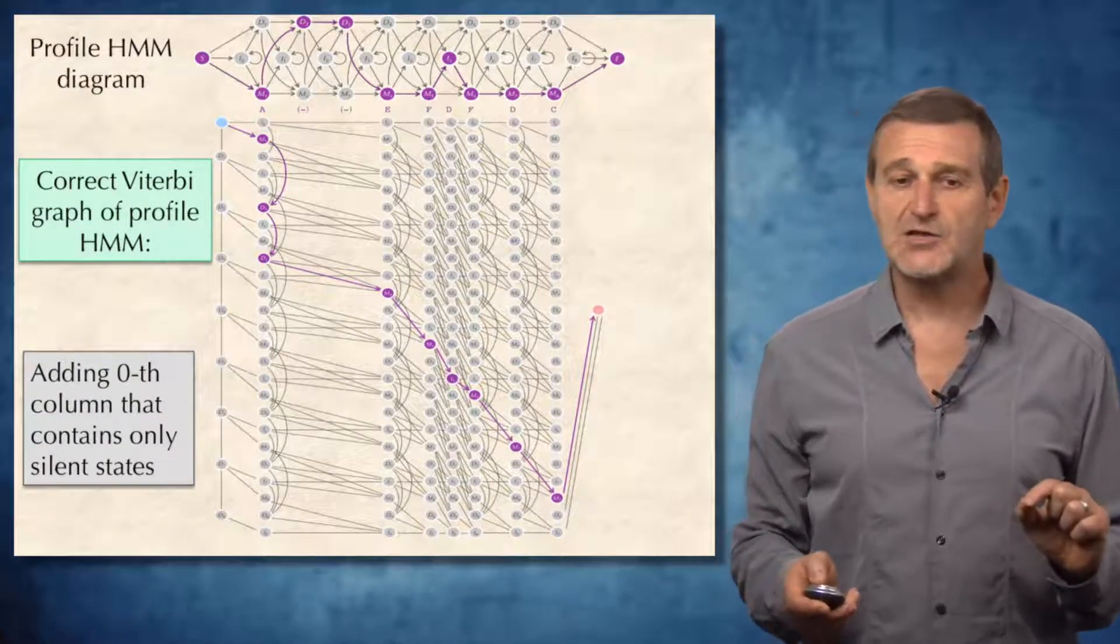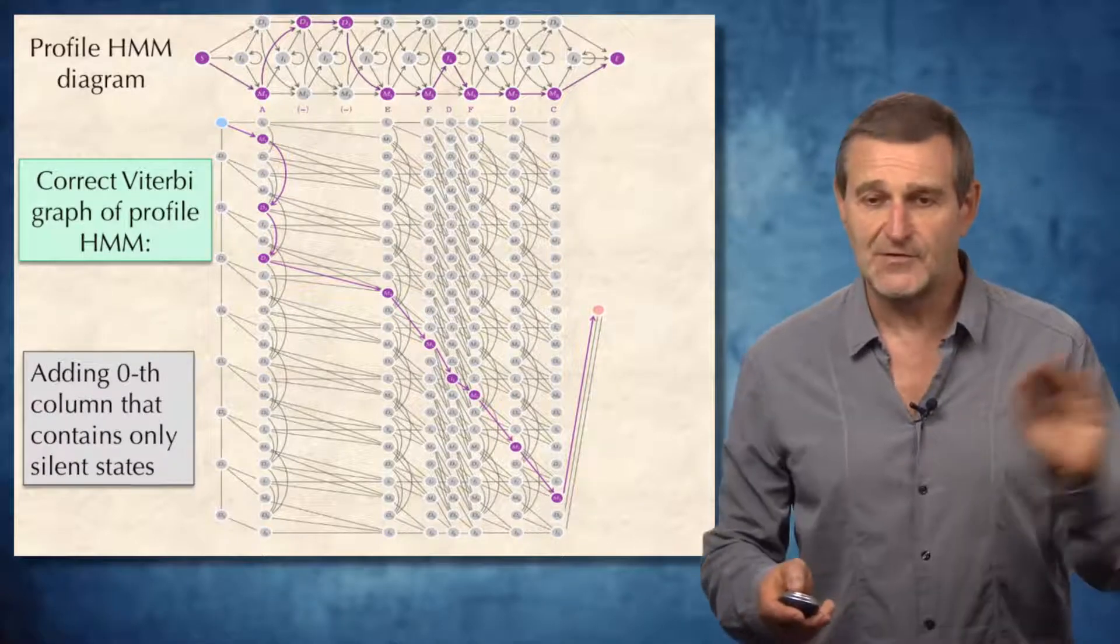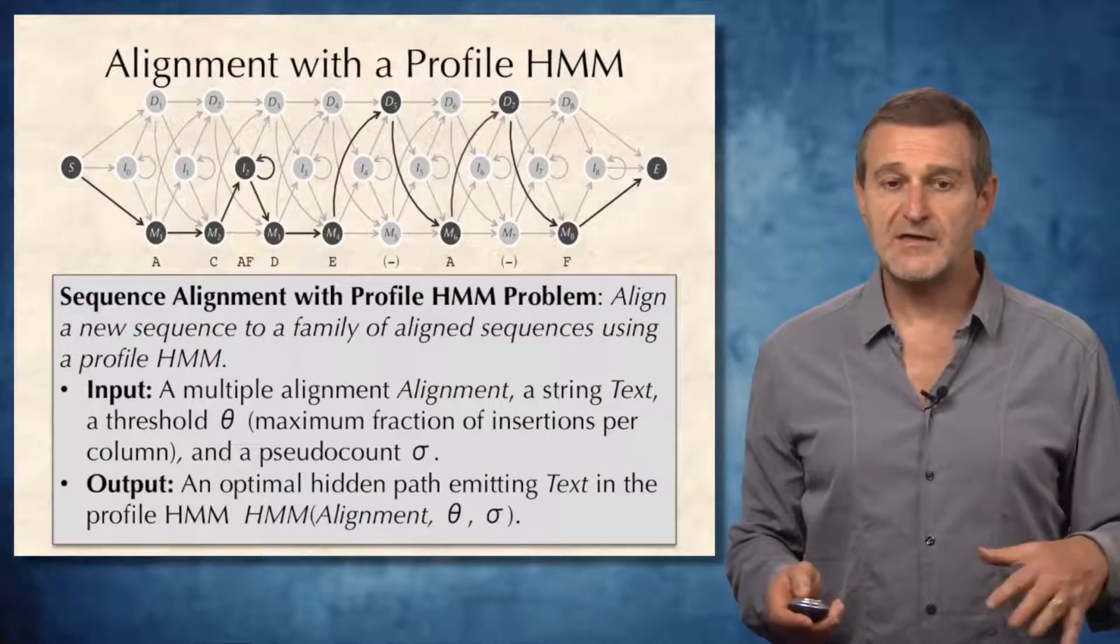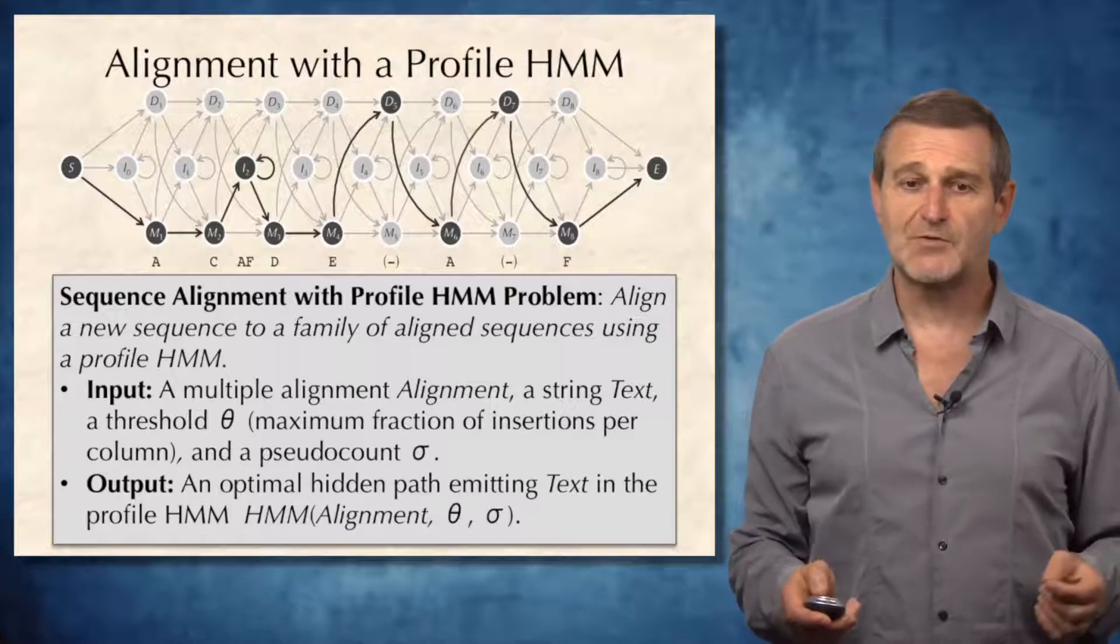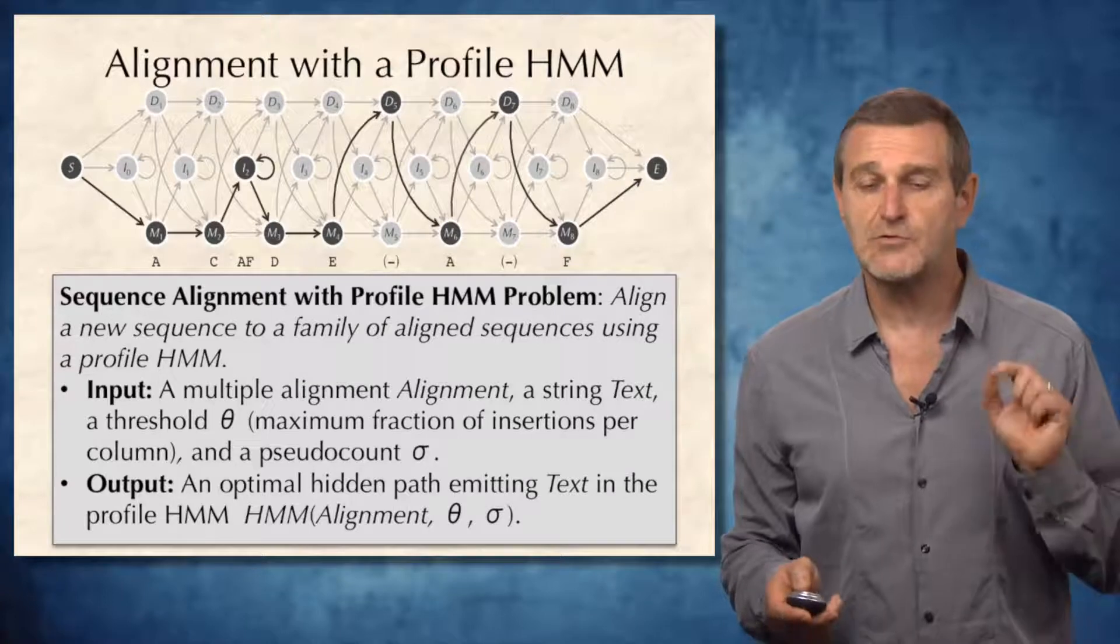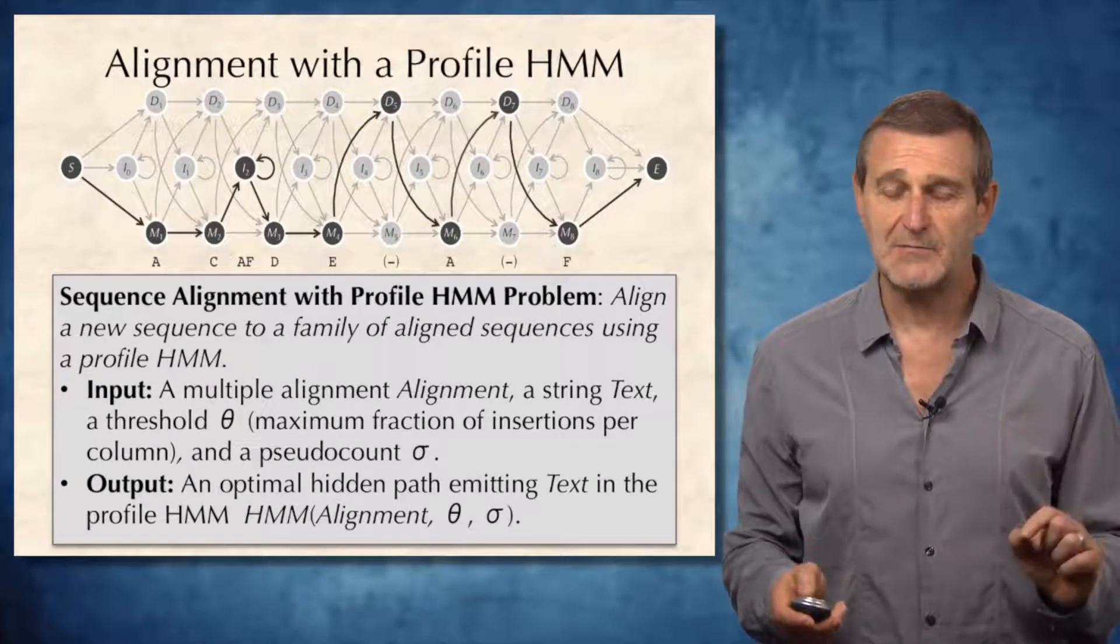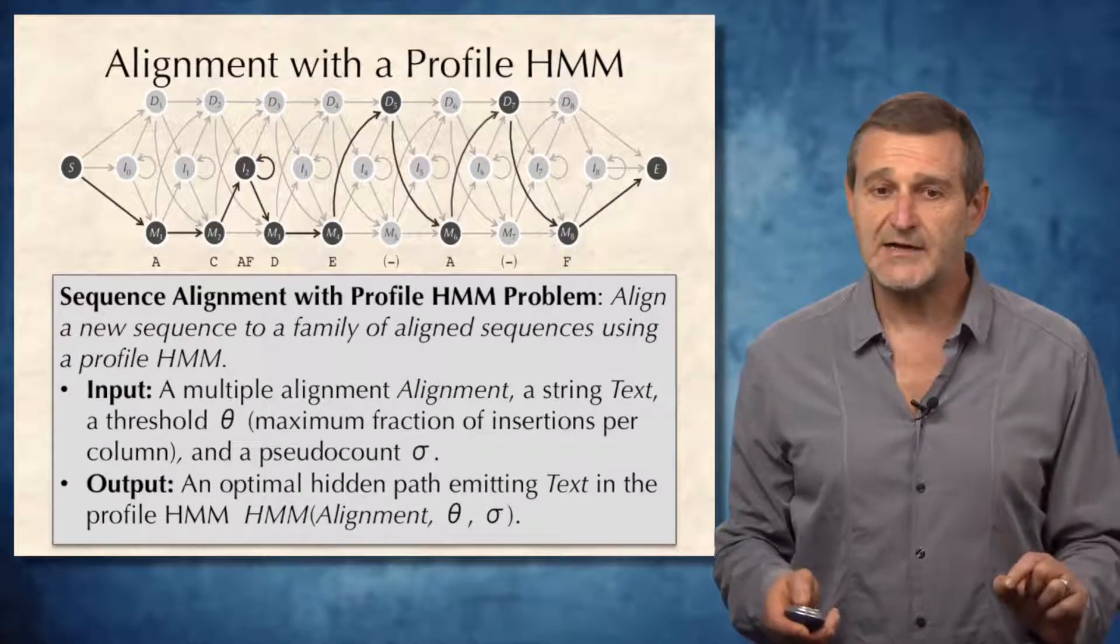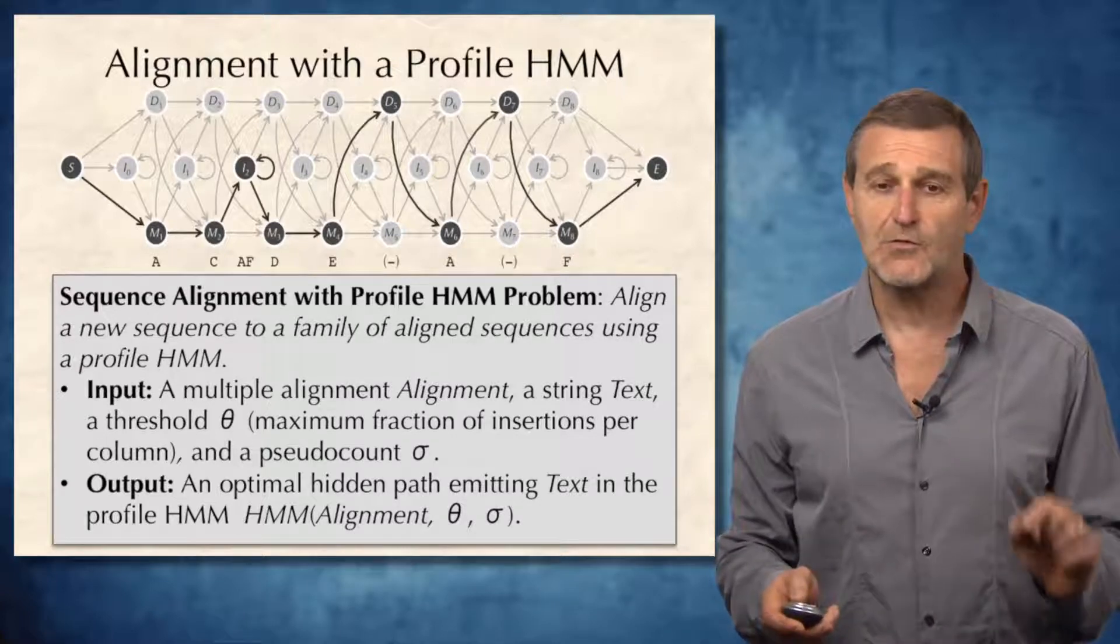The only thing we need to add is the zero column that contains only silent states for technical details. So we just reduced the problem of alignment with the profile HMM to the following problem: align a new sequence to a family of aligned sequences using a profile HMM. The input is a multiple alignment, a string text, a threshold θ describing the maximum fraction of insertions per column,